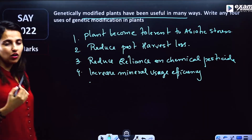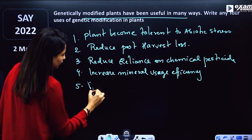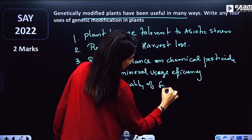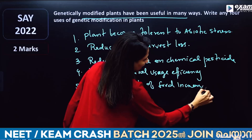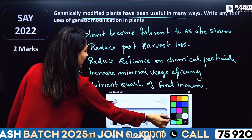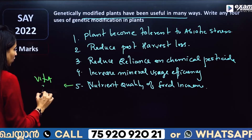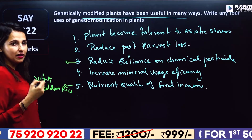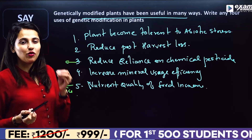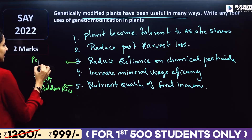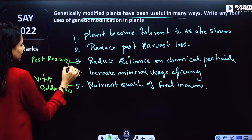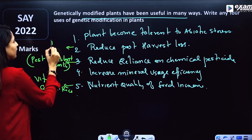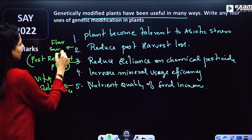The nutrient quality of food increases. Also, we have pest-resistant plants. Then, we have the Flavr Savr tomato — a genetically modified tomato with extended shelf life.